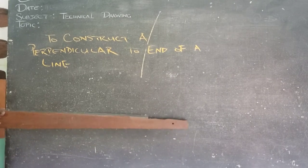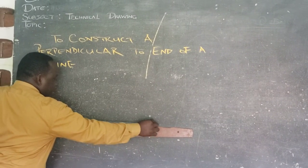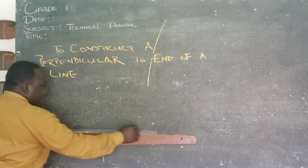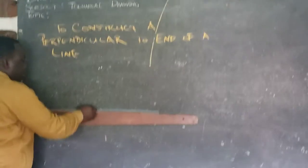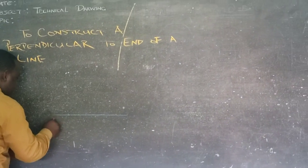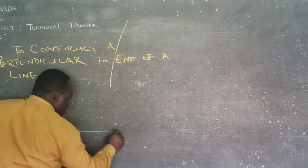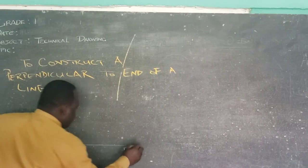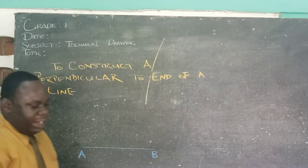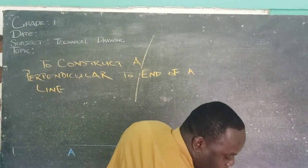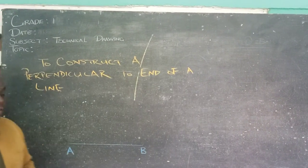Now our given line, let us see that our given line is AB. So AB is our given line. Now we're going to be constructing a perpendicular to the end of our given line.